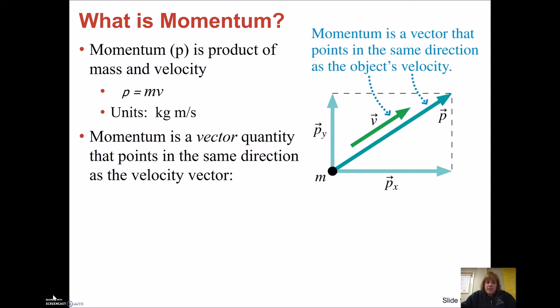Momentum is a vector. Velocity is a vector, momentum is a vector, and in fact that vector points in the same direction as the velocity vector of the object. So if I have a mass here that's moving in this direction, its velocity is in this direction, then its momentum is also in that direction.